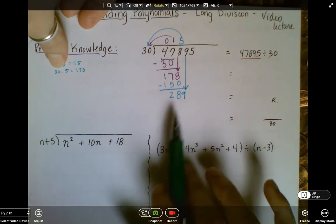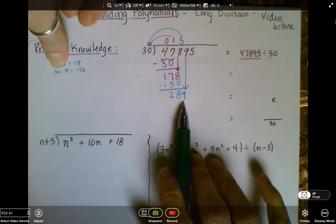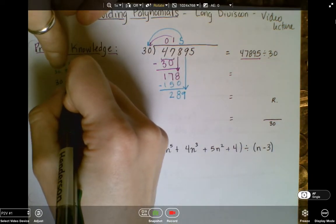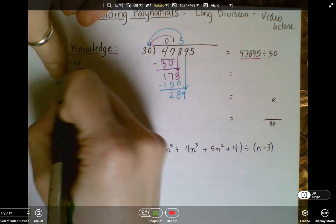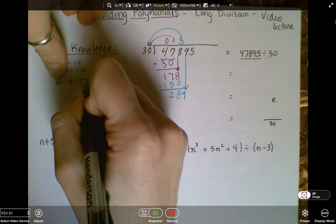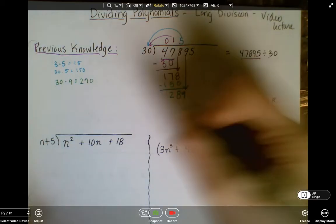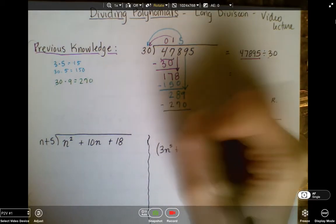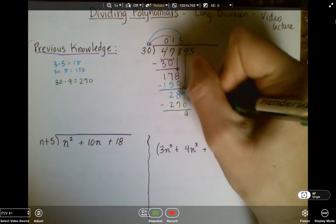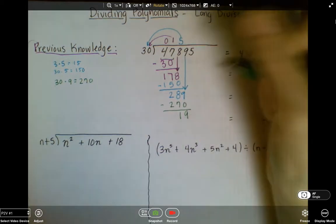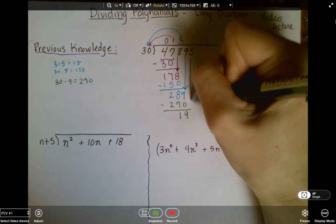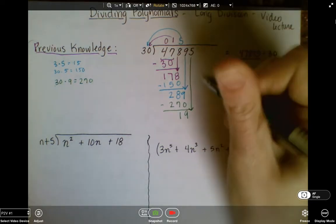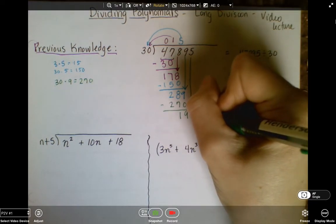30 times 10 would give us 300, so we're going to say 30 times 9 is going to give us 3 times 9 is 27, times 10 is 270. And then we would subtract and get 19. And then we remember to bring down our 5. This is very much the traditional algorithm.